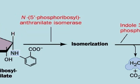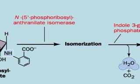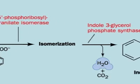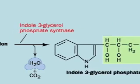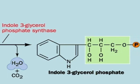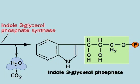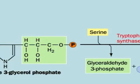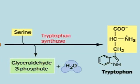Two steps, starting with an isomerization and yielding H2O and CO2, make indole-3-glycerol phosphate. Two final steps remove a glyceraldehyde-3-phosphate and add a serine to make tryptophan.